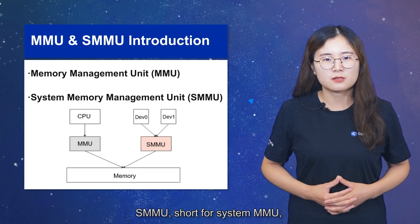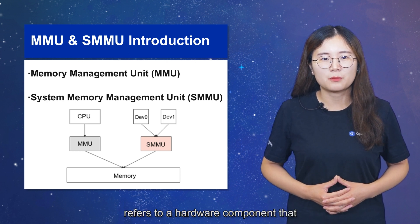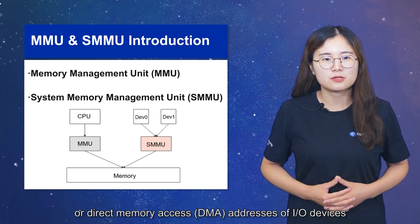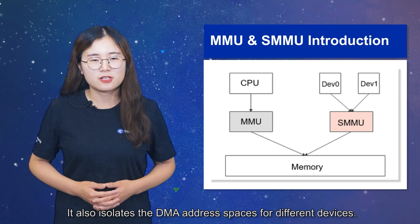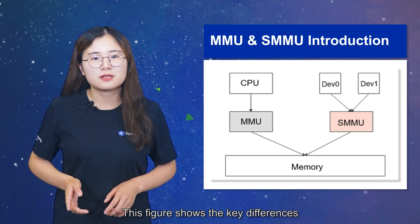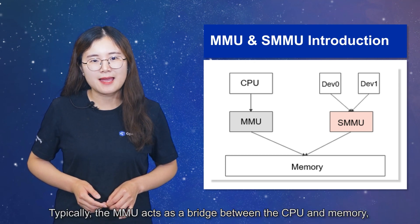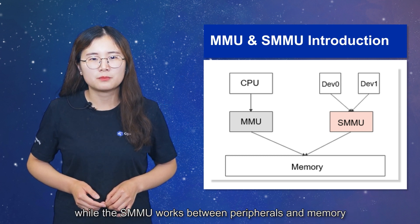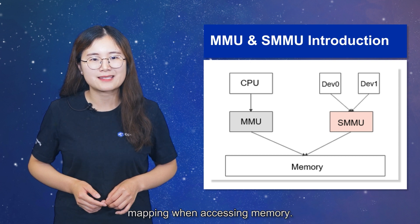SMMU, short for System MMU, also known as IOMMU, refers to a hardware component that translates IO virtual addresses or direct memory access addresses of IO devices into physical addresses on the system bus. It also isolates the DMA address spaces for different devices. This figure shows the key differences between an MMU and SMMU. Typically, the MMU acts as a bridge between the CPU and memory, while the SMMU works between peripherals and memory, though both use page tables to execute address mapping when accessing memory.